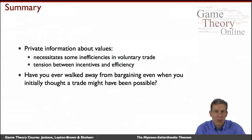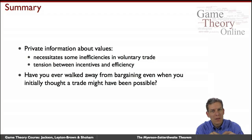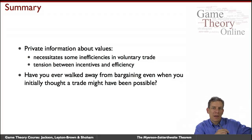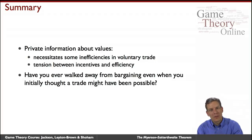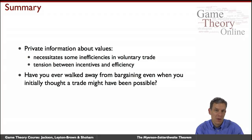In summary: private information about values necessitates some inefficiencies in voluntary trade, and leads to a basic tension between incentives and efficiency that is impossible to get around. By the revelation theorem, think of any mechanism you'd want — if it has equilibria leading to efficient trade, we can write it as a direct mechanism. The proof shows no matter what, it's impossible to write anything down with the desired properties of always trading when you want to and being incentive compatible. People are going to tend to lie, leading to inefficient outcomes.